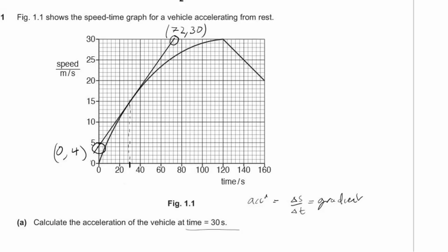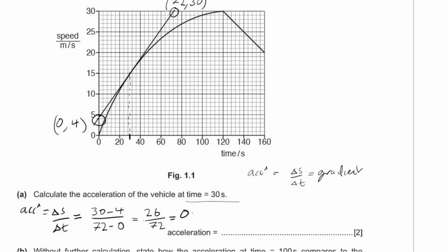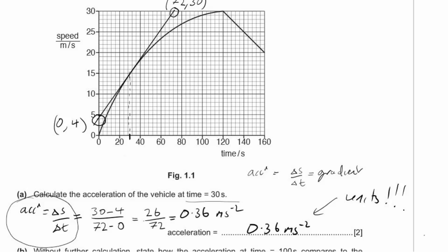The point down at the base looks to be (0, 4). So we're going to find change in speed divided by change in time. Acceleration equals change in speed divided by change in time. The speed is changing between 30 and 4 — 30 minus 4 — and the time is changing between 72 seconds and 0. We calculate 26 divided by 72, which gives us a value of 0.36 metres per second squared. Remember the units — very important. Also remember to put down the equation you're using.